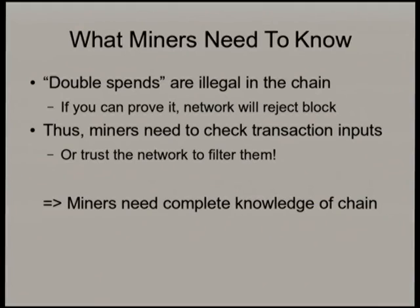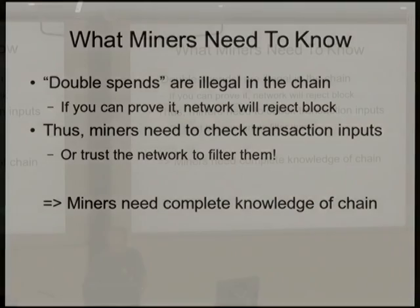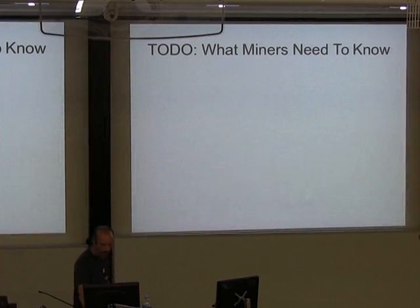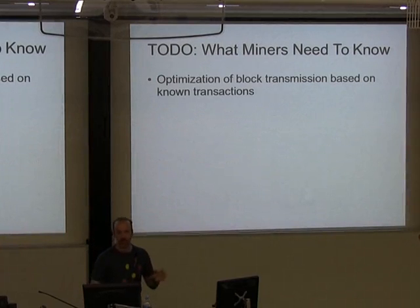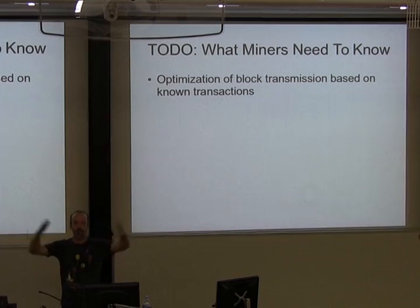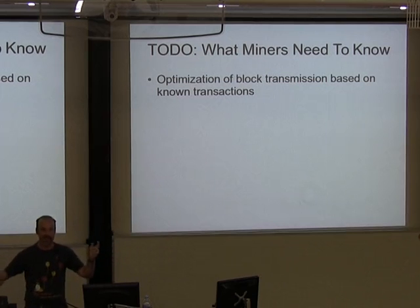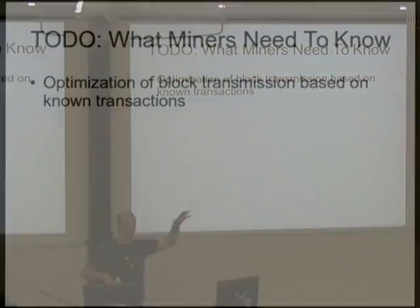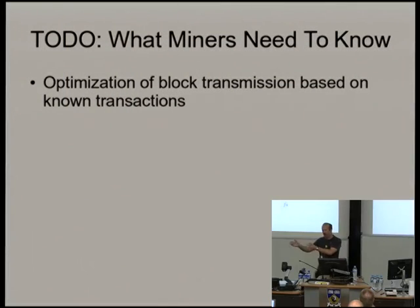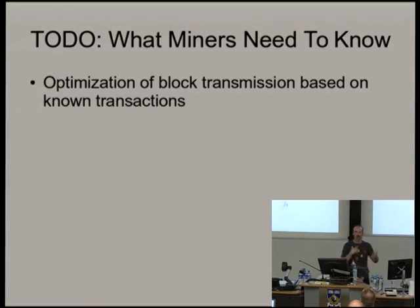Miners, in order to not generate double spends, will need to check the transaction inputs, or trust the network to filter them. This implies that miners need to have complete knowledge of the chain — unlike normal nodes, you really need to know the whole thing. So you are going to have to take in 100,000 transactions per second. That's the trade-off. There are actually a couple of tricks we can do — because you're watching transactions go around the network and then somebody solves the block and here's all the transactions again — because we know they will be ordered in a certain way, you can optimise and go: I've probably seen most of their transactions, I've got the hashes, I can figure out most batches, and only ask for the ones I'm missing.